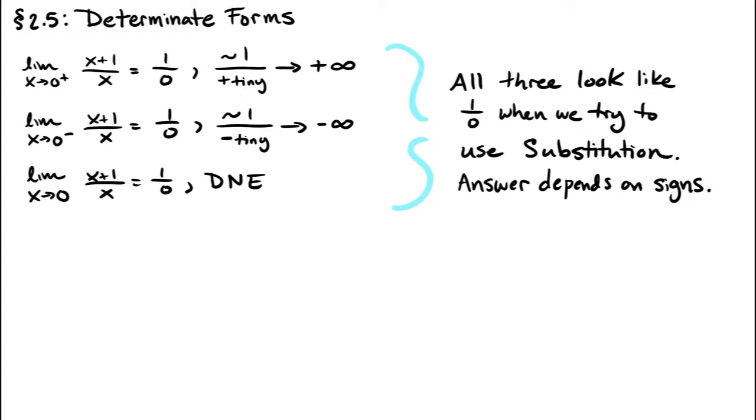So in all three cases, when we use the substitution method, it looks like we're getting 1 over 0, but we're getting three different answers for the limit: plus infinity, minus infinity, or does not exist. And these different answers are coming out because of signs. Whether the denominator is consistently positive, consistently negative, or could be either one, in this case determines which of these three answers we get. In general, if the substitution gives you a constant divided by 0, then the limit is going to be one of these three things, and deciding which one depends on looking closely at signs.